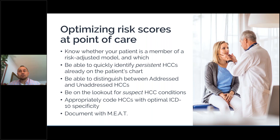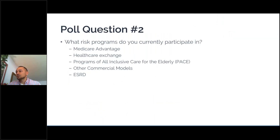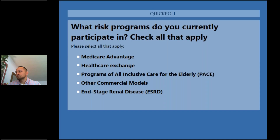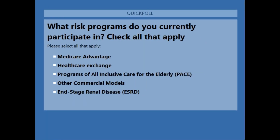Before going further, we're going to ask one more poll question to get a feel for which risk models you are familiar with: What risk programs do you currently participate in? You can check all that apply — Medicare Advantage, Healthcare Exchange, Programs of All-Inclusive Care for the Elderly or PACE, other commercial models, or End-Stage Renal Disease.